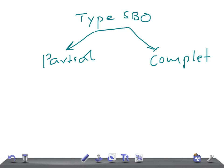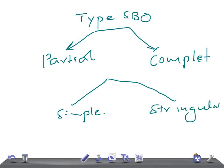Another classification is simple SBO versus strangulated SBO. Simple means the patient has abdominal pain, nausea, and vomiting but no ischemia. Strangulated means there is strangulation, death of tissue, necrosis, leading to peritoneal infection, perforation, and peritoneal signs. It is a really fatal condition — if untreated, the patient can die.